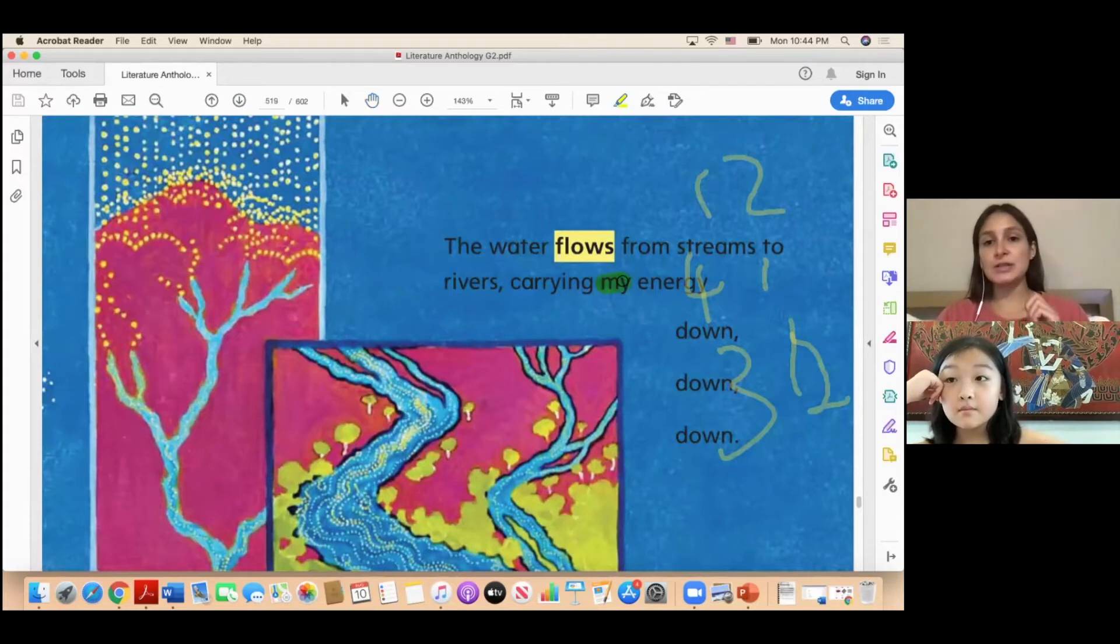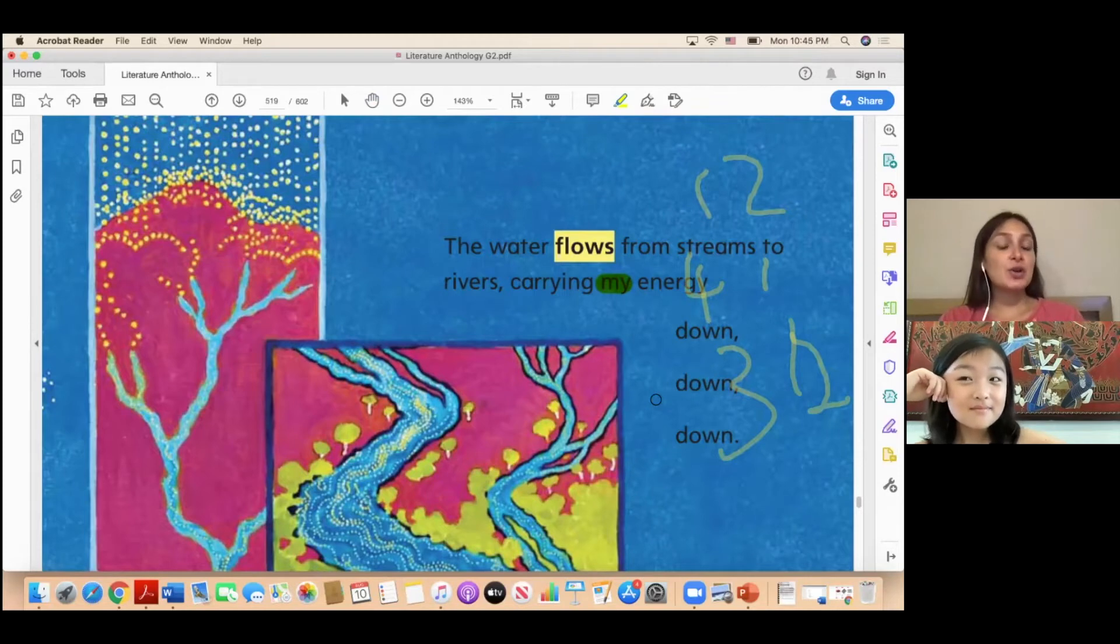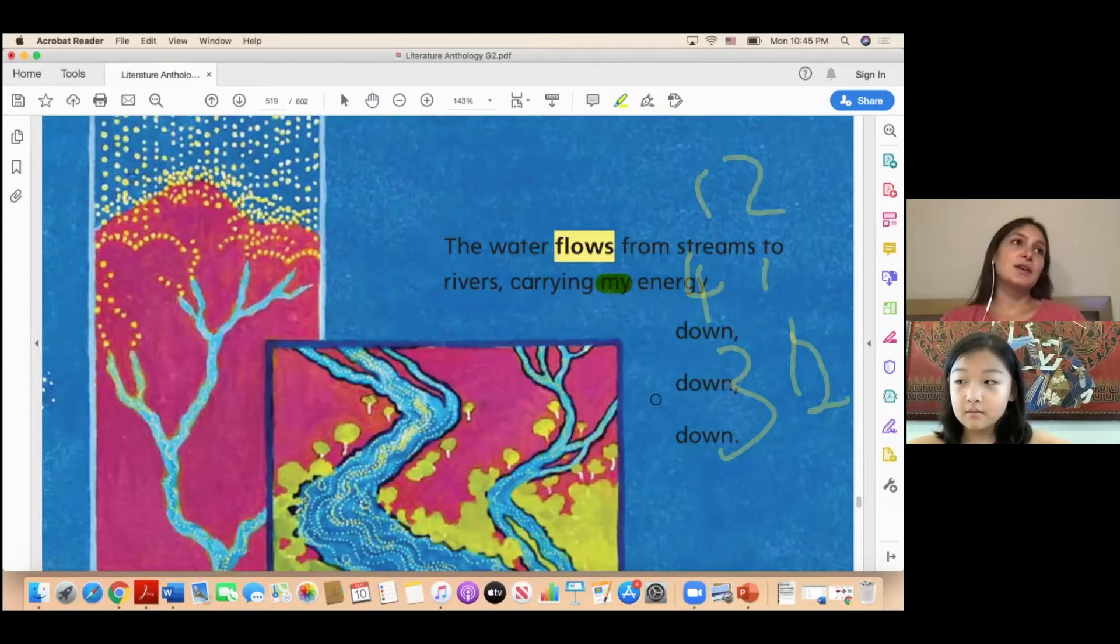The reason it says 'my' a lot is because here the person who is talking, the person who is telling the story, is energy. Okay? So energy comes from sun, energy comes from water, from wind. That's why it's saying 'my,' right? It's like the energy is telling this story.